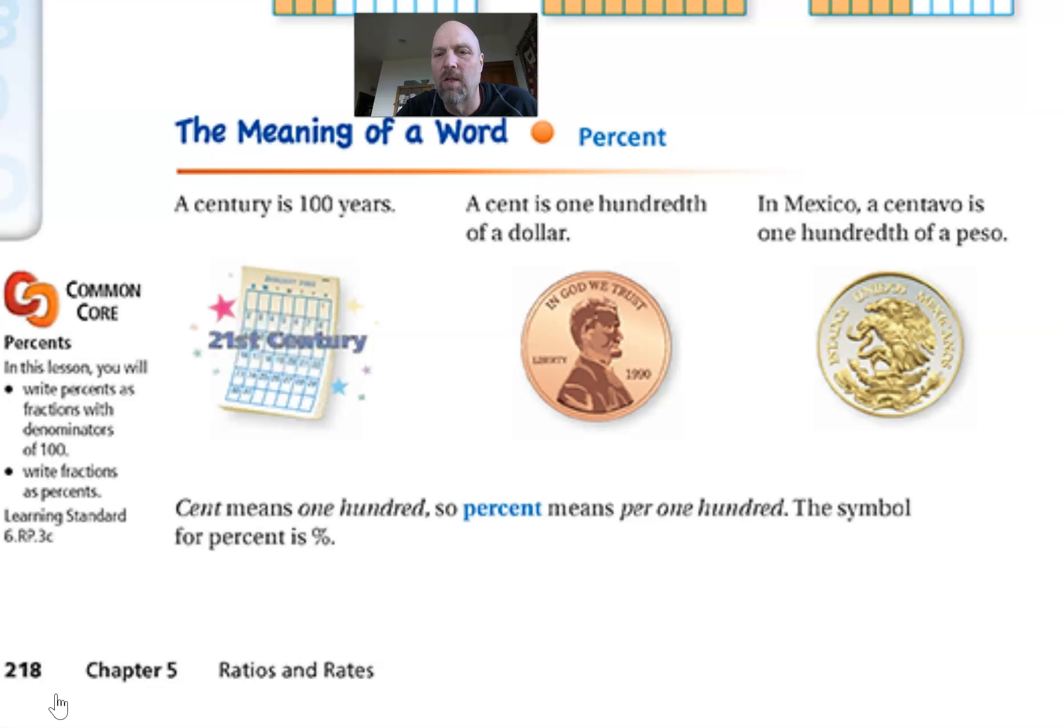And even in Mexico, they have centavos, which works exactly like our cents. It's one hundredth. So a cent means one hundred, century, hundred, per 100. This is one out of a hundred. I know, I didn't know that either. It's just amazing.